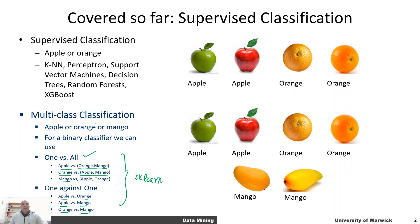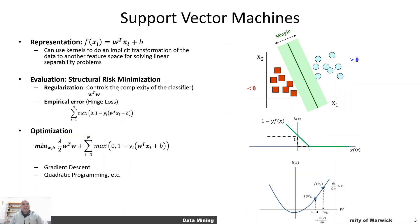I welcome you to explore that on your own, but essentially we've covered supervised classification. We've talked about support vector machines and broken them down into the three components: representation, evaluation, and optimization. A support vector machine is essentially a linear classifier that generates a prediction score for a given example xi — the feature representation of the example — and we take a dot product of xi with a weight vector and add a bias term.